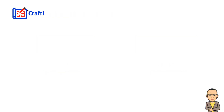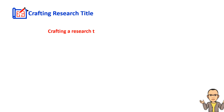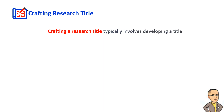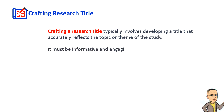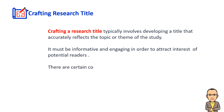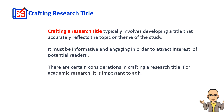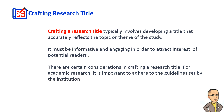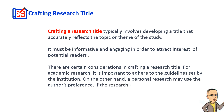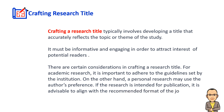The second task after identifying the research variables is the crafting of a research title. Crafting a research title typically involves developing a title that accurately reflects the topic or theme of the study. It must be informative and engaging in order to attract the interest of potential readers. For academic research, it is important to adhere to the guidelines set by the institution. A personal research may use the author's preference. If the research is intended for publication, it is advisable to align with the recommended format of the journal.